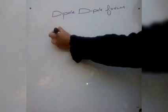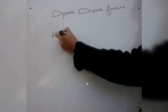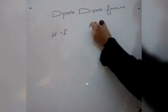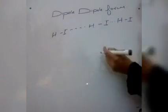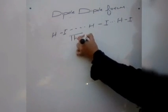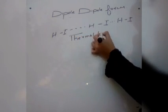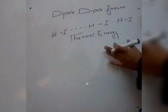When polar molecules such as hydrogen iodide develop dipole-dipole forces, they become lined up. However, this alignment becomes disturbed due to thermal energy — thermal energy disrupts their alignment.